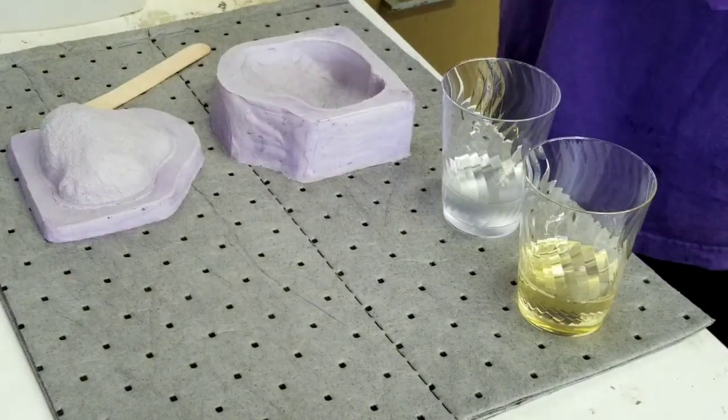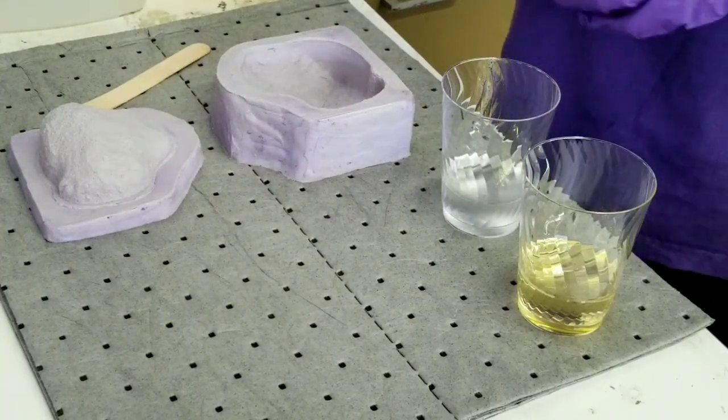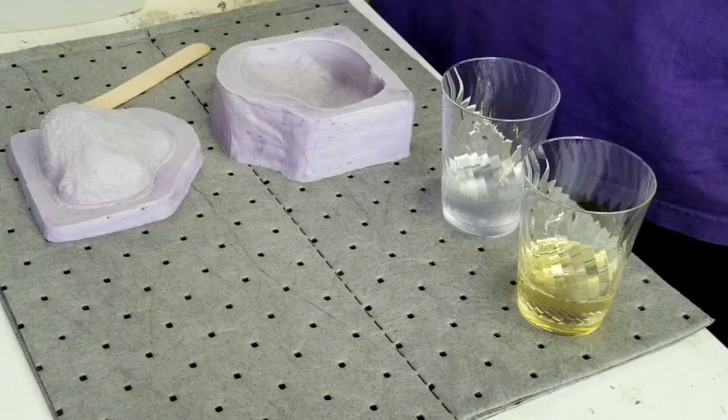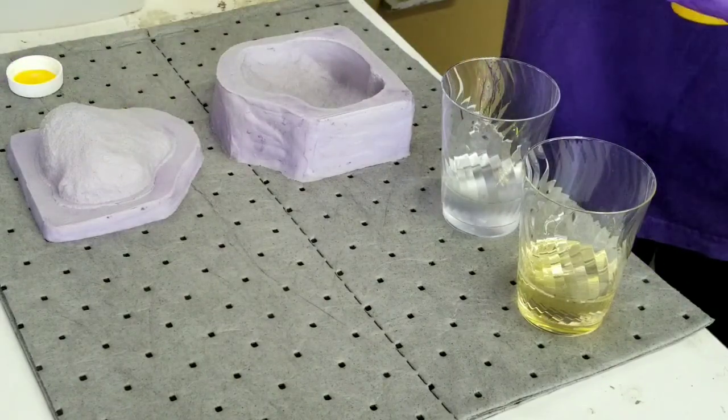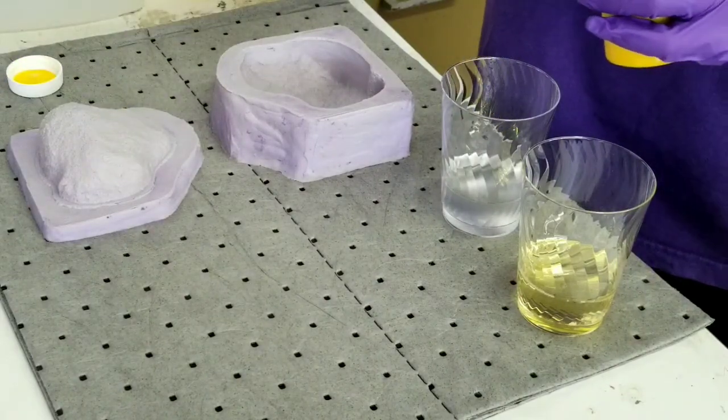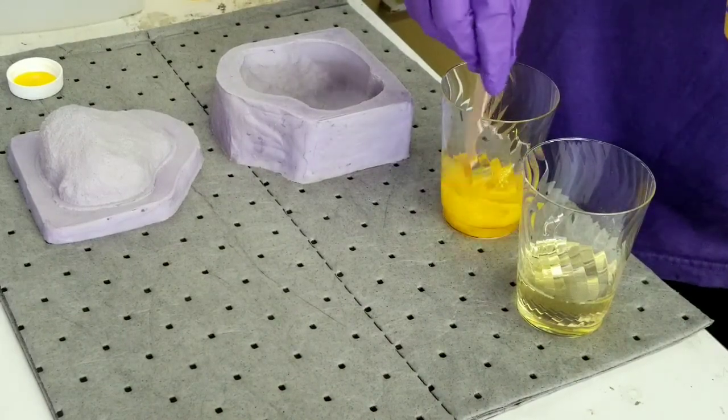Squish mold - equal parts A and B urethane casting resin. Mix a little yellow urethane colorant into the B side.